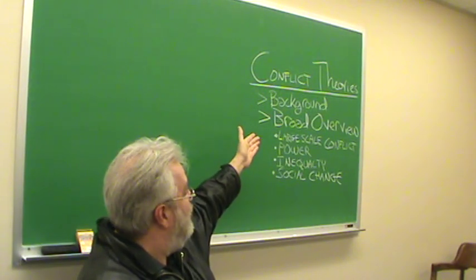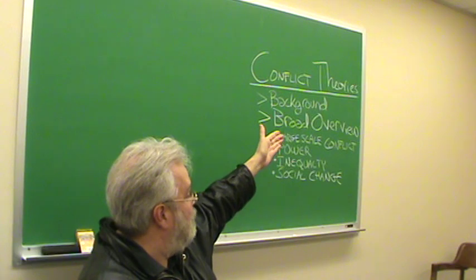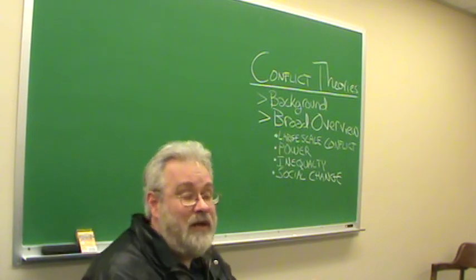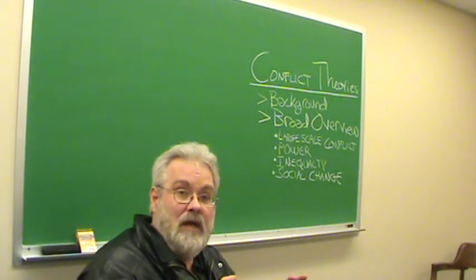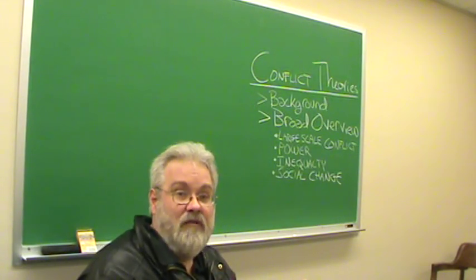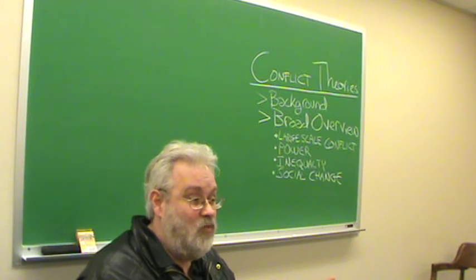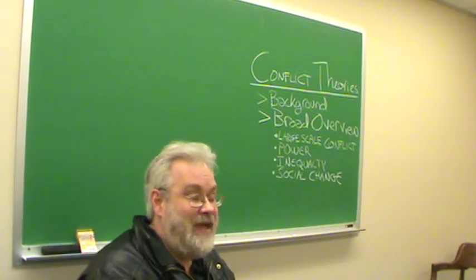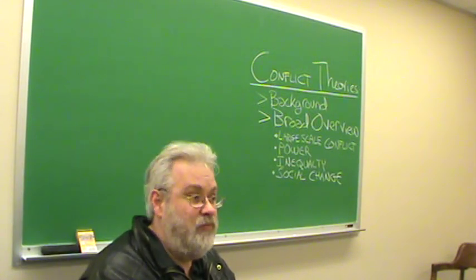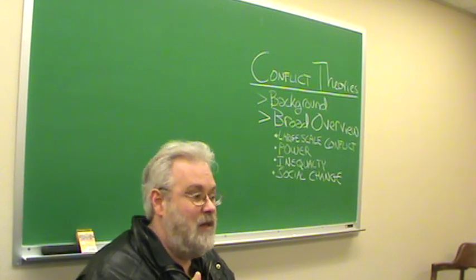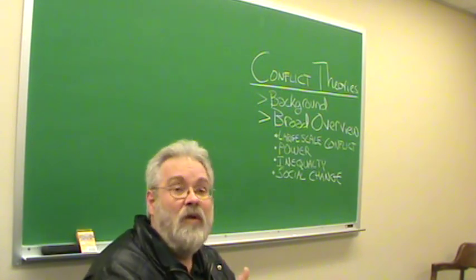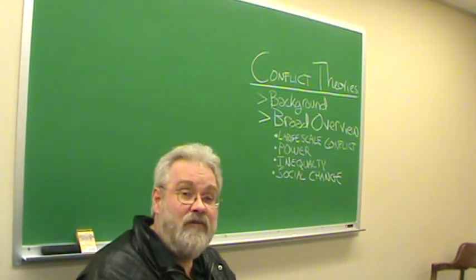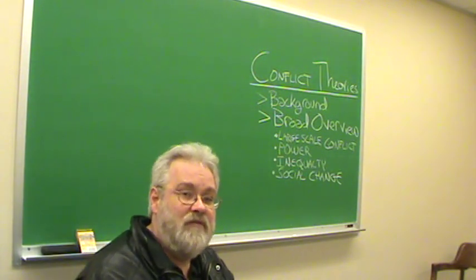First of all, conflict theory emphasizes large-scale social conflict. That's why they call it conflict theories or conflict perspective. Large-scale social conflict comes in multiple varieties. It could be revolutions. It could be the gay rights movement, the civil rights movement. It could be the Tea Party movement or the Occupy Wall Street movement. It often involves protest, and it sometimes involves violence.